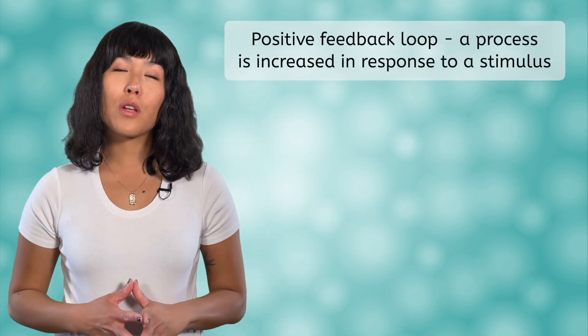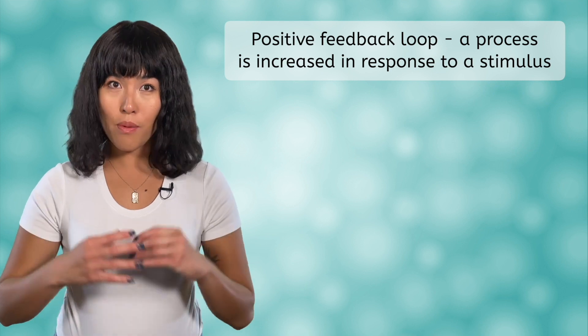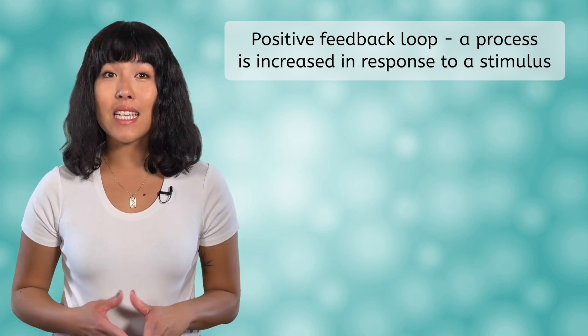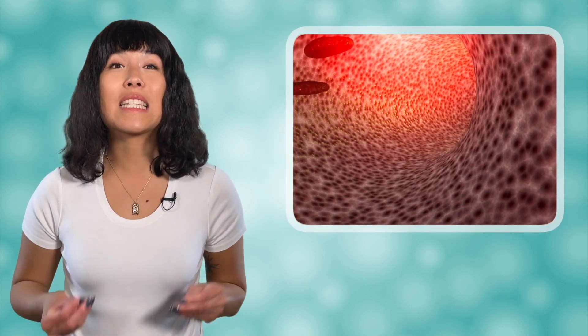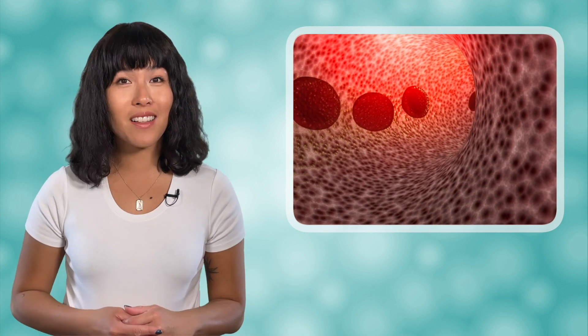Occasionally, your body will use a mechanism called a positive feedback loop to help maintain homeostasis. However, this is rare. Positive feedback loops are when a process is increased in response to a stimulus. An example of this process is blood clotting. When you have a cut, platelets in your blood release chemicals to attract more platelets, which help promote blood clotting.